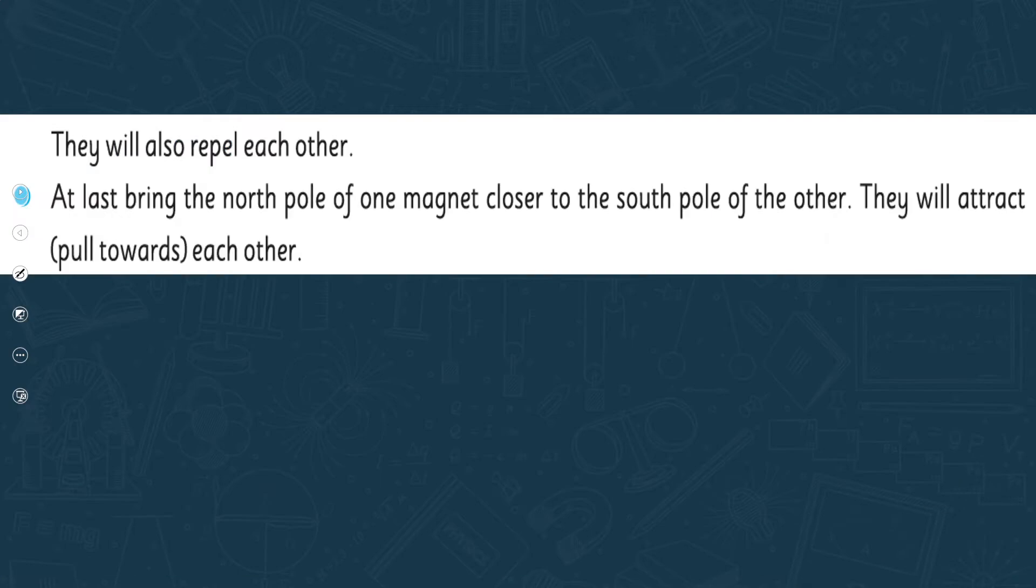They will repel or push away each other. Then bring the south poles of the magnet closer to each other - they will also repel each other. At last, bring the north pole of one magnet closer to the south pole of the other - they will pull or attract each other. One by one we will see repulsion and attraction between our magnets.